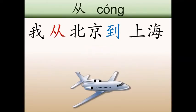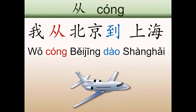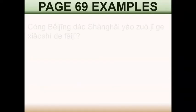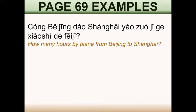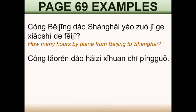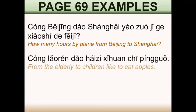Let's see some examples. The first one: 我从北京到上海 — I go from Beijing and arrive to Shanghai, these two cities in China. Some other examples come from page 69 in the book. The first one: 从北京到上海要坐几个小时的飞机 — How many hours by plane from Beijing to Shanghai? The second one: 从老人到孩子都喜欢吃苹果 — From the elderly to children, all of them like to eat apples.